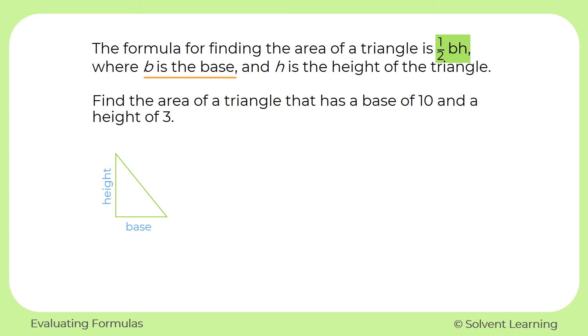Next, we want to know what those variables represent. We're told that B represents the base and H is the height of the triangle. So let's put all this information together in our workspace. Our formula is one half BH, and we know that B is the base and H is the height. It is very important to make sure that you can find this information in your word problem.